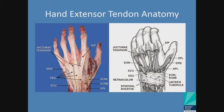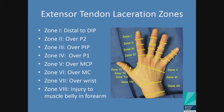Extensor tendon injuries: your extensor tendons are connected by juncturae tendinum, which help keep the tendons stabilized. The common extensor tendons, EDM, EIP, and EPL extend distally to the digits. Zone one extensor tendon injuries are your mallet fingers — when a ball jams a digit, typically the distal extensor tendon gets injured where it inserts on the distal phalanx. Zone two through five lacerations are mostly from open or laceration injuries, but can result from closed trauma as well.